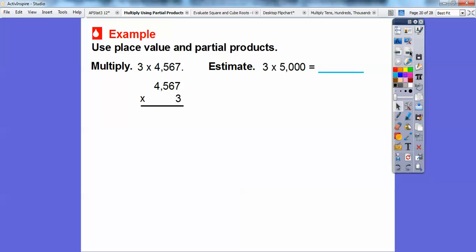So use place value and partial products to multiply 3 times 4,567. This would round up, it's closer to 5,000. So to estimate, let's multiply 3 times 5,000. Well, 3 times 5 is 15, so I'm going to add three zeros to that. That's going to make it 15,000. And since 5,000 is bigger than 4,567, it's going to be less than this, a little bit less.